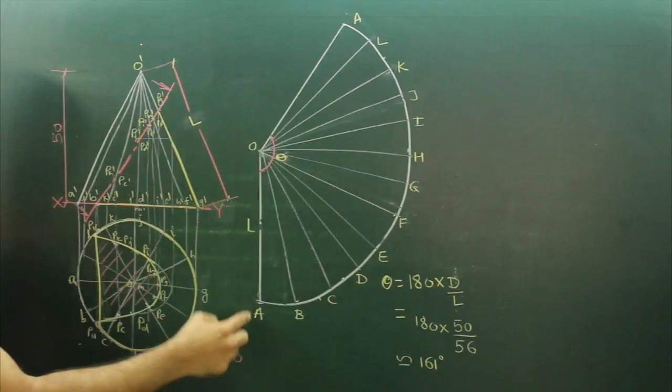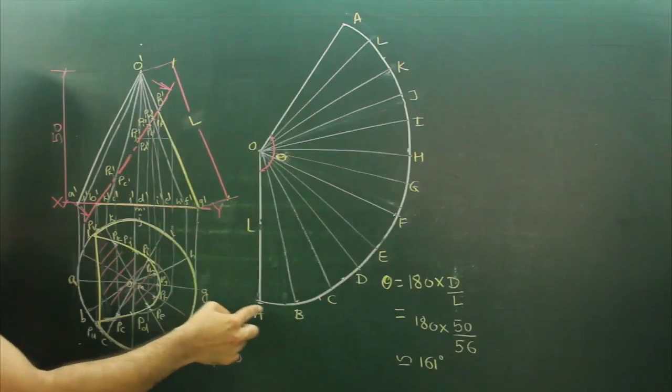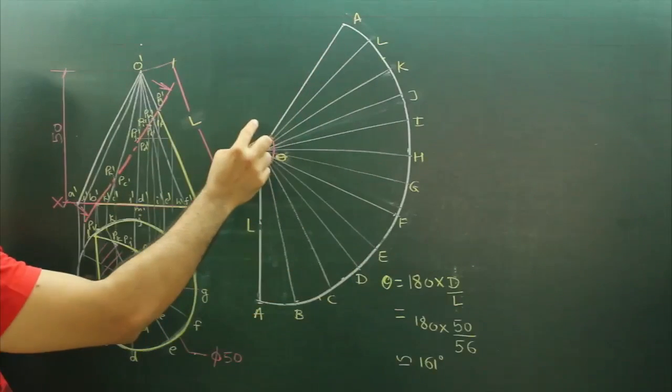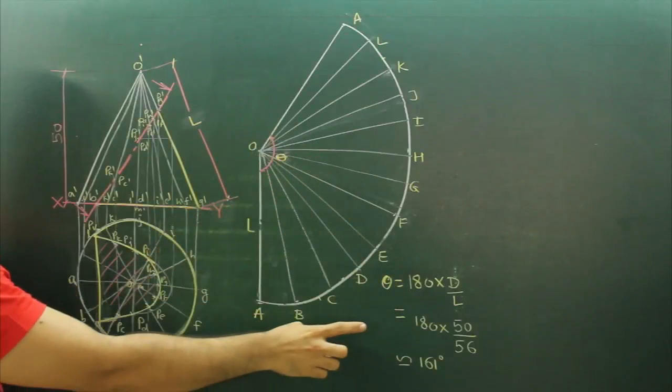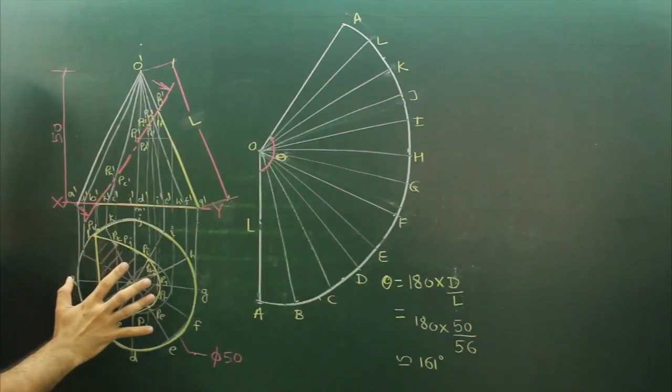So what I will do, I will draw a straight line. I will take O' to G' that is slant length. I will draw straight and I will rotate. And I will take angle 161. And I will divide it into 12 parts, because I have divided circle into 12 parts.